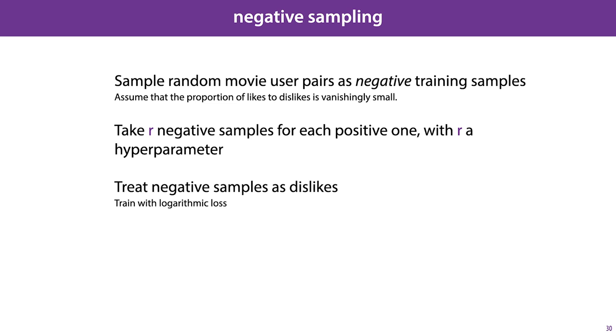Usually, the proportion of positive user-movie pairs is vanishingly small compared to the proportion of pairs that are either negative or pairs for which the users are ambivalent. So, if we sample a random pair, we can be almost certain that the user won't like the movie or won't much care about the movie. Commonly, we take multiple negative samples for each positive one. And the number of negative samples we take, r is a hyperparameter. And with these negative samples in hand, we can treat the problem as a binary classification problem, like we saw in the last slide, and train our embeddings with logarithmic loss.